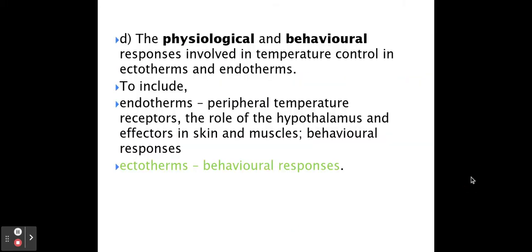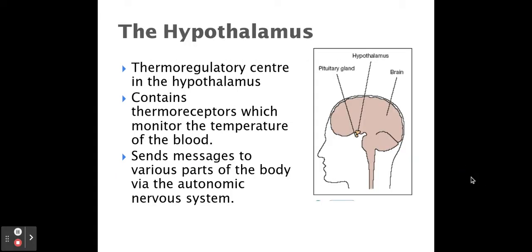So that's an ectotherm — the cold-blooded animals. Endotherms can use behavioural responses, such as moving to a warmer place or putting more clothes on. But our internal body temperature can also be regulated physiologically, helping us to increase or decrease our body temperature by doing a number of things.